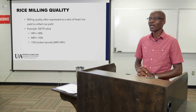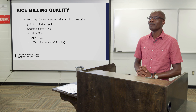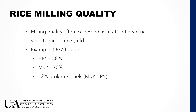Let me describe what we call rice milling quality. Milling quality is often expressed as a ratio of head rice yield to milled rice yield. This example gives us a 58 to 70 value of milling quality. In this case, head rice is 58% and milled rice is 70%, and the broken rice would be the difference — 12%.